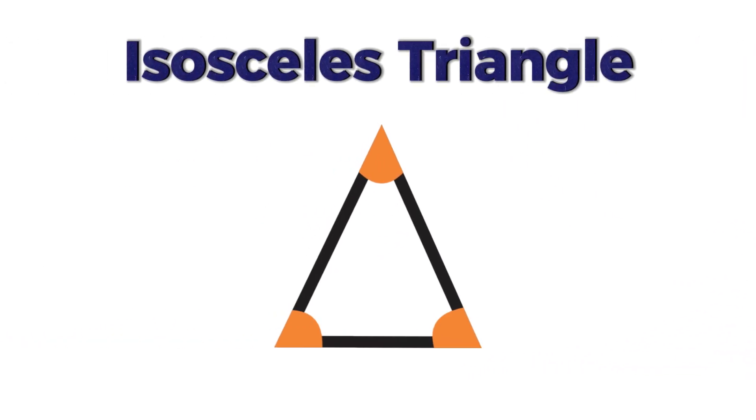Moving on to the isosceles triangle. An isosceles triangle has two sides of equal length and two angles of equal size.